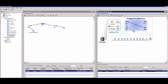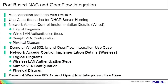This concludes our demo, where we illustrated how 802.1X may be used to integrate with OpenFlow and ProgrammableFlow technologies to implement network access control for both wired and wireless users. To recap the second video of our 802.1X and OpenFlow integration series, we covered the network access control implementation details for the wireless scenario, including the logical diagrams, the wireless LAN authentication steps, a sample VTN configuration showing the PFC configuration for the scenario, and a physical diagram for the topology used in our demo. We put it all together by illustrating a demo of how a wireless user may be authenticated and admitted into the 802.1X and OpenFlow network.